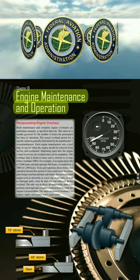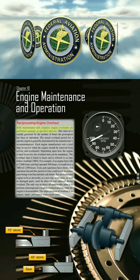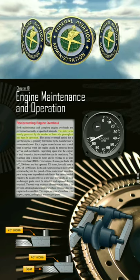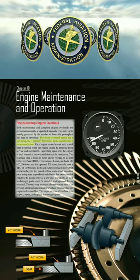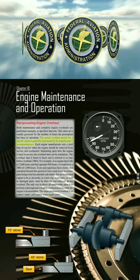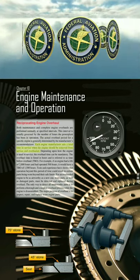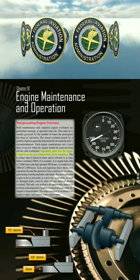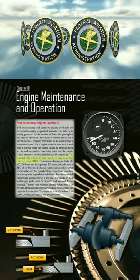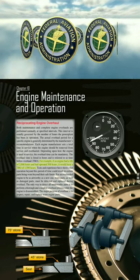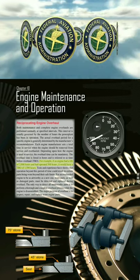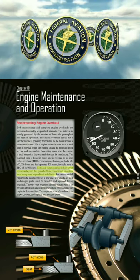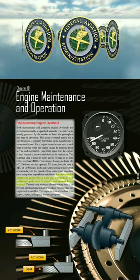Chapter 10: Engine Maintenance and Operation. Reciprocating engine overhaul — both maintenance and complete engine overhauls are performed normally at specified intervals. This interval is usually governed by the number of hours the power plant has been in operation. The actual overhaul period for a specific engine is generally determined by the manufacturer's recommendations. Each engine manufacturer sets a total time in service when the engine should be removed and overhauled. The overhaul time is listed in hours and referred to as Time Before Overhaul (TBO). For example, if an engine had a life of 2,000 hours and had operated 500 hours, it would have a TBO of 1,500 hours. Tests and experience have shown that operation beyond this period could result in certain parts being worn beyond their safe limits.